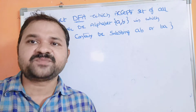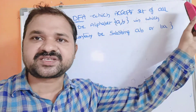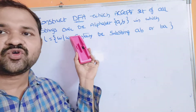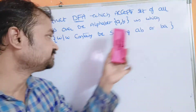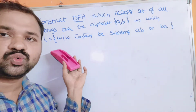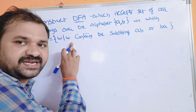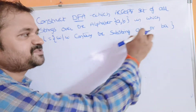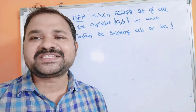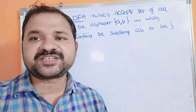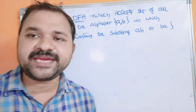Now let's see this example. Consider a DFA which accepts the set of all strings over the alphabet A, B, where L is equal to the set of strings W such that W contains the substring AB or BA. So here the language accepts a set of strings which contains the substring either AB or BA.